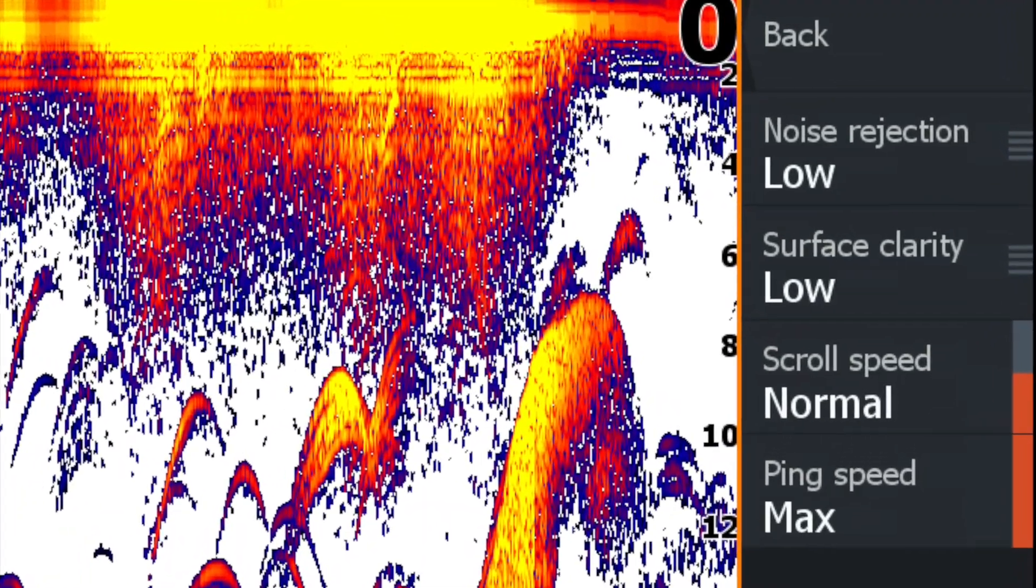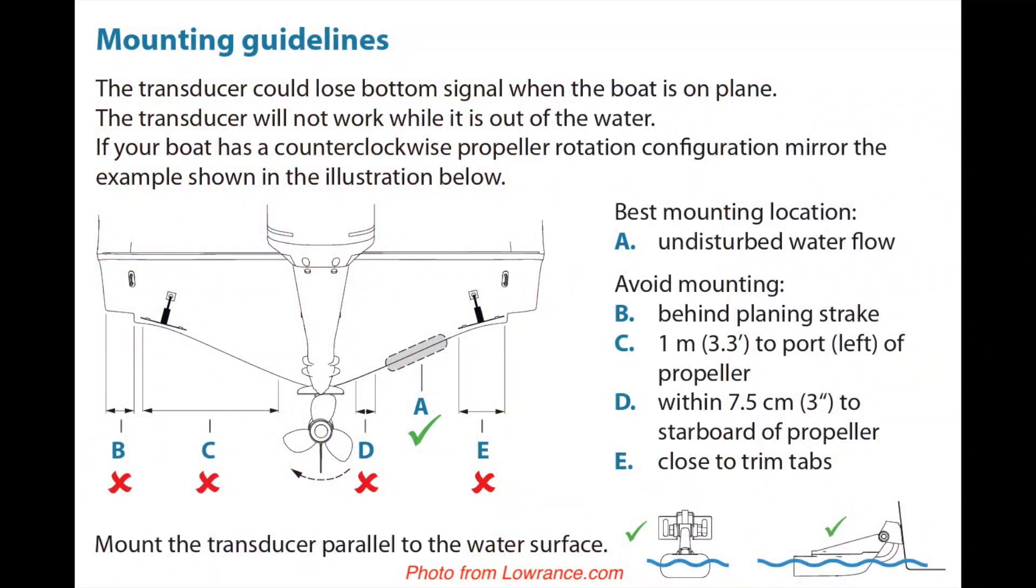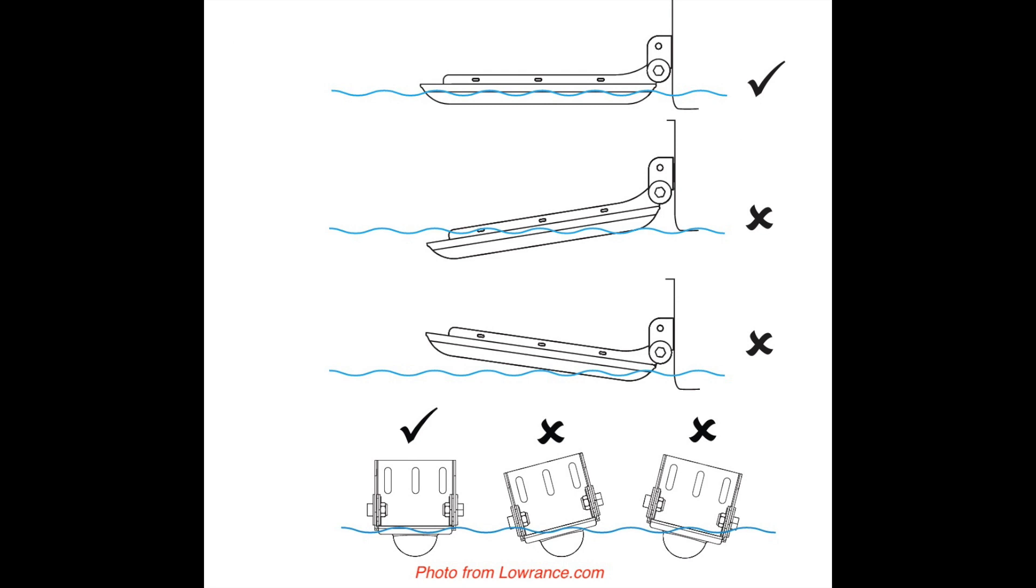Now there's some assumptions before we start. We're assuming that you have a correctly installed system, meaning the transducer is mounted correctly so you're not getting turbulence or air bubbles that can affect the return you're getting. Otherwise you're going to get a lot of noise and not be able to make use of your sonar for spotting fish when you're underway or moving at any speed above four to five knots.